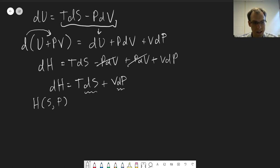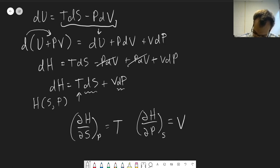And so we can do the exact same thing we did with du. I'm just going to show the results. But we can say that dh ds at constant p is equal to temperature. That's going to come from here. dh dp at constant s is equal to volume. That's from here. And then our Maxwell relation is going to be dt dp at constant s is equal to dv ds at constant p.